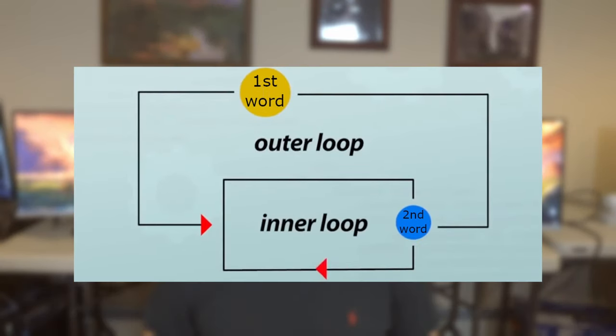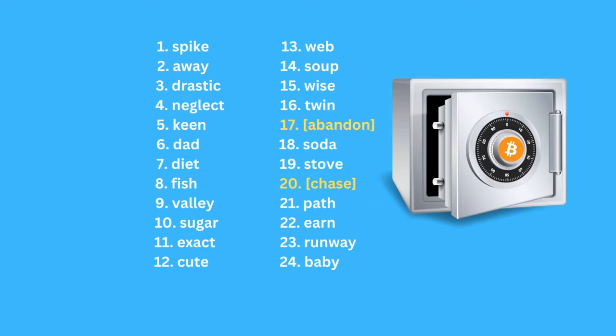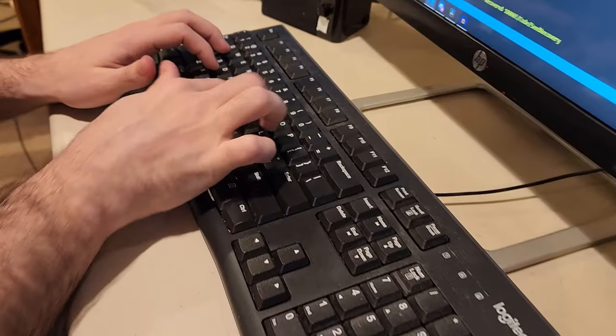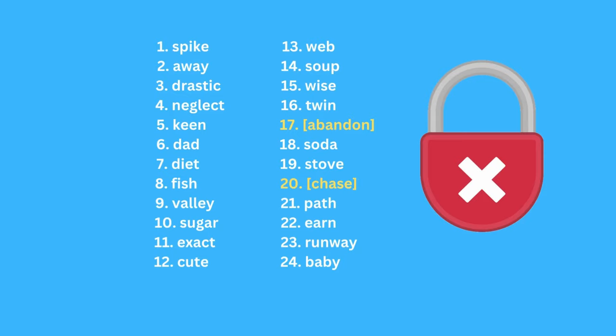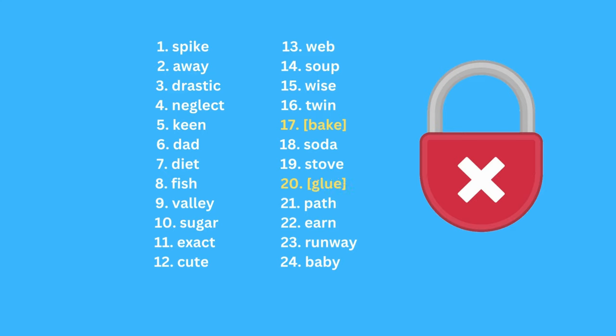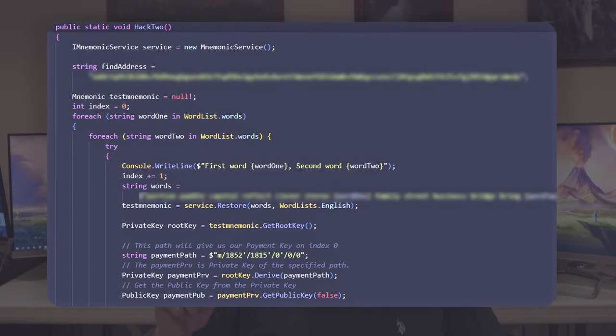We're in a good position because my friend has only ever used one address on this wallet. If we loop through all these words and it does find this wallet, we'll know for a fact it's correct. Now that we know the public address we're searching for, we're going to use a double loop on the two duplicate words. We start with the first duplicate word and replace it with the first word in the crypto word list, then replace the second duplicate word with each of the 2048 words until we find a match. This will result in our computer trying over 4 million combinations. Here's the code for this attempt — let's see if it works.